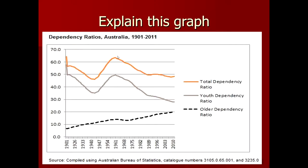Your second task is to explain this graph of dependency ratio, which was obtained in 2011 after the census in Australia. Write down how you can explain this graph of dependency ratio.